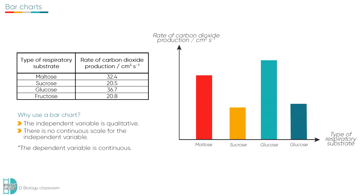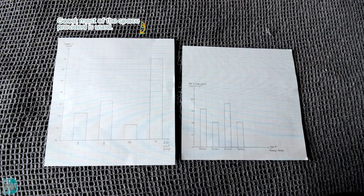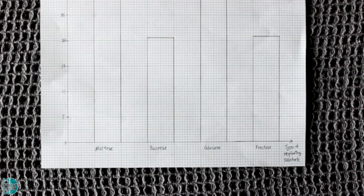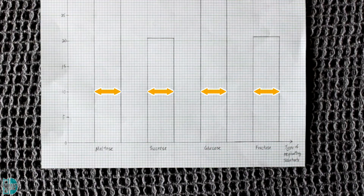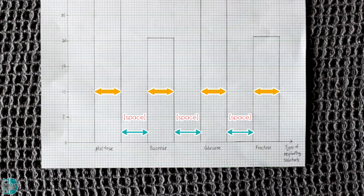There are some important rules to remember when drawing bar charts in the examination. Firstly, you should use most of the grid provided — do not make the chart too small. As a rough guideline, always make sure it is larger than half of the grid provided. Secondly, always draw the chart using a pencil, not a pen. Bar charts should be made of blocks of equal width, with space between the bars, and the intervals between the blocks on the x-axis should be equidistant.